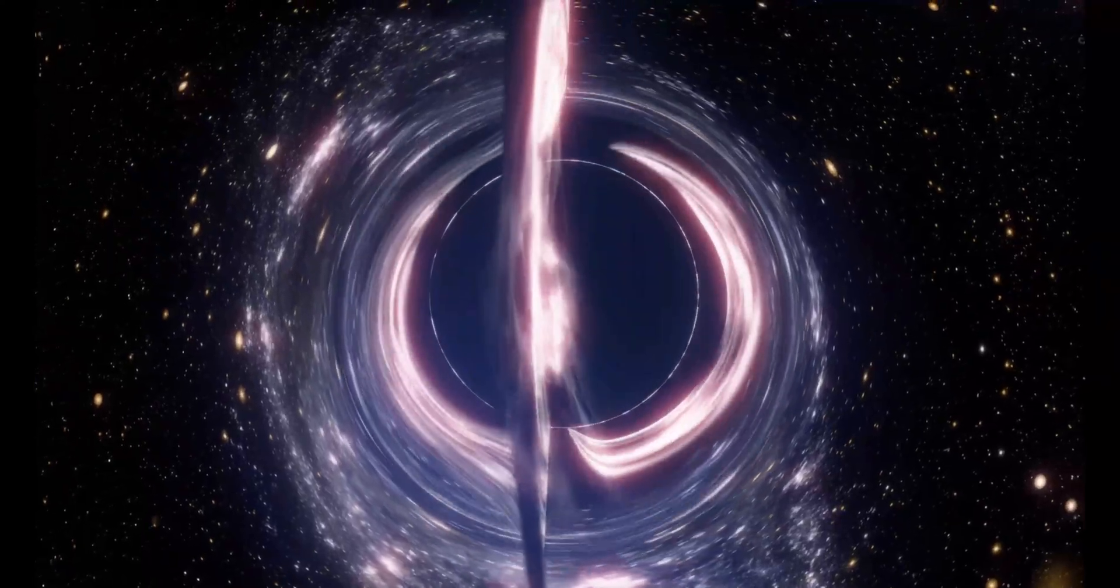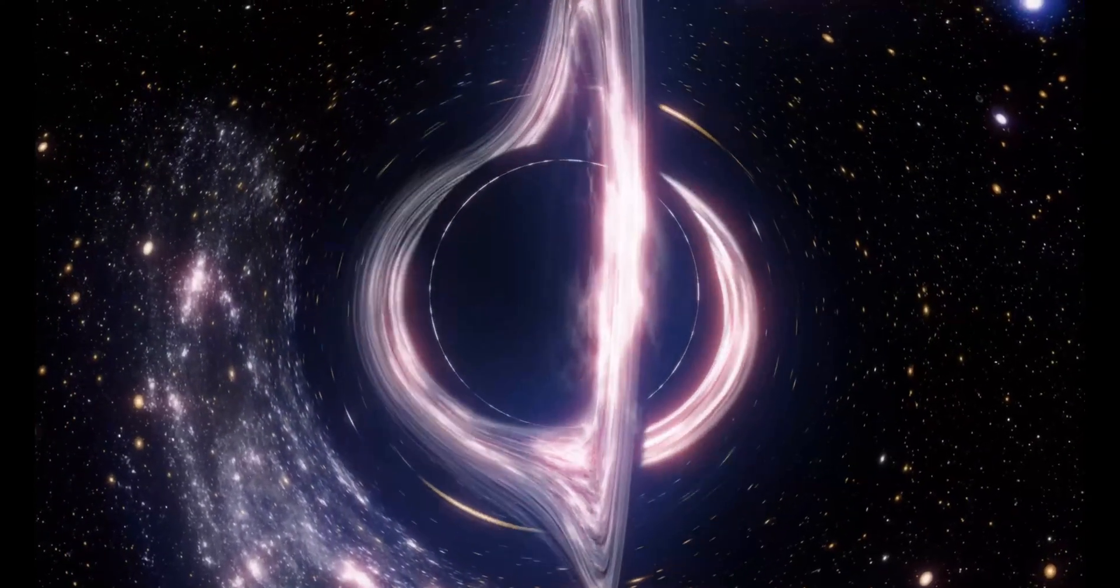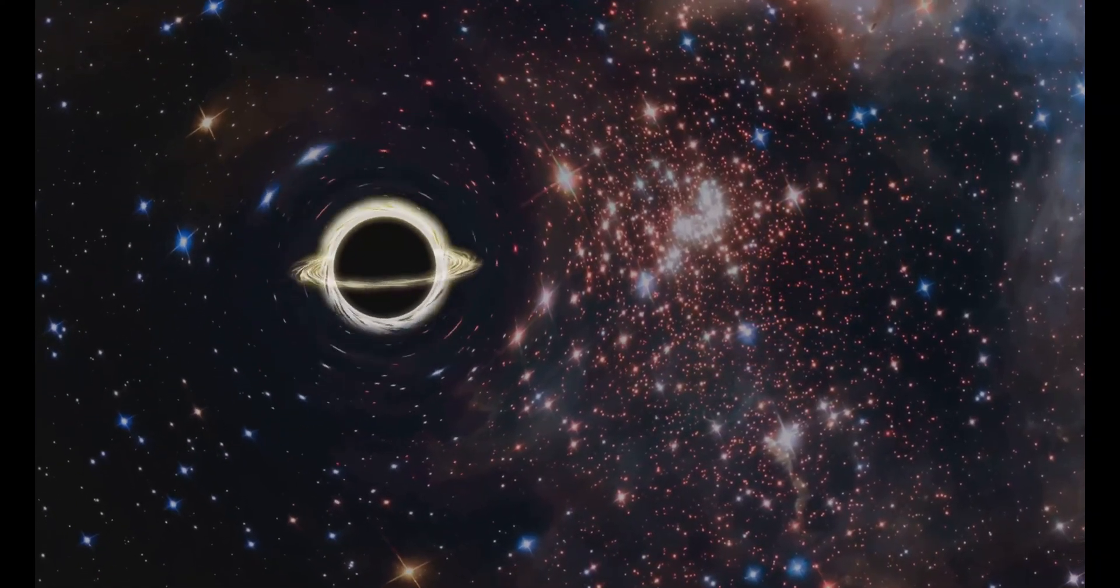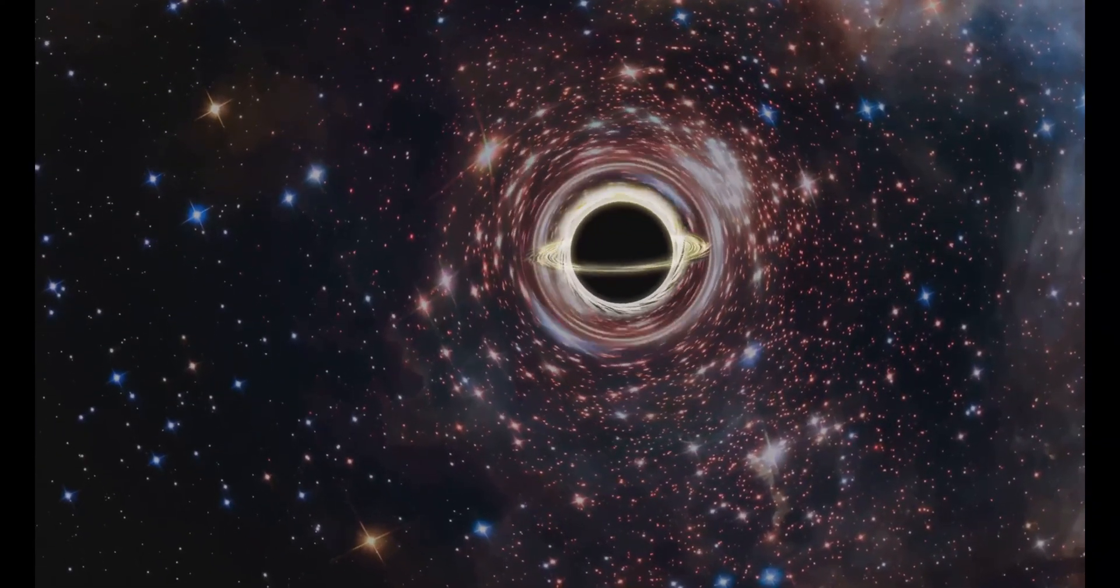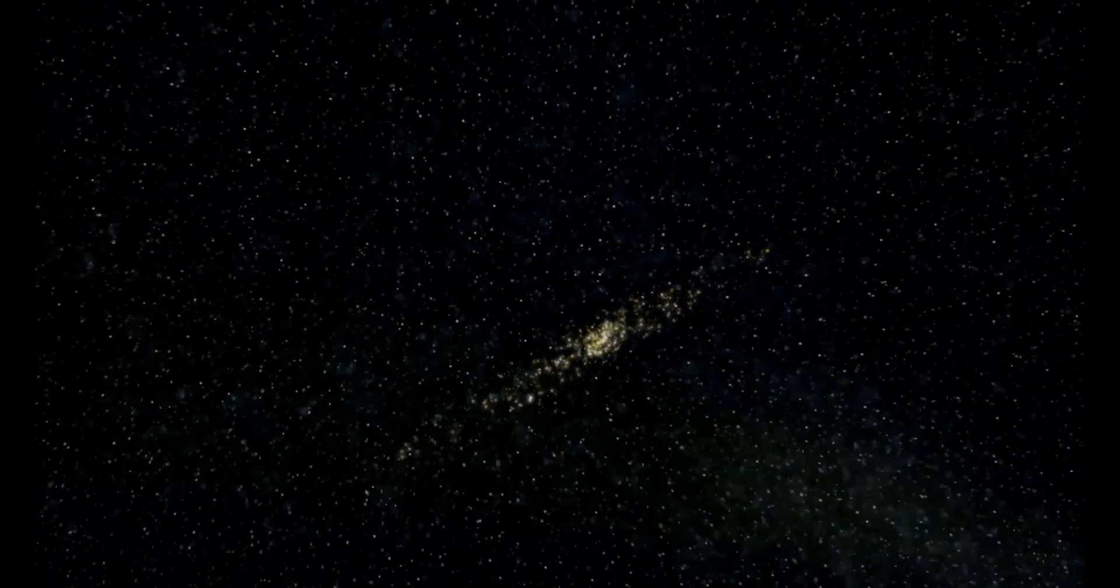They pull in everything that gets too close, including stars, gas, and even entire solar systems. The immense gravitational force of a black hole can distort and stretch objects, a process known as spaghettification. But don't worry, they are very far away from us. The nearest known black hole is thousands of light years away, posing no threat to our planet.